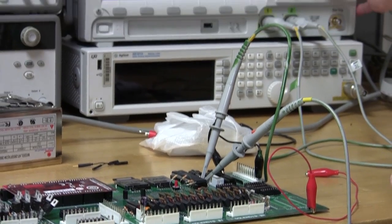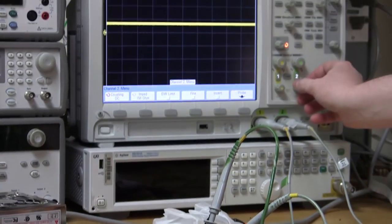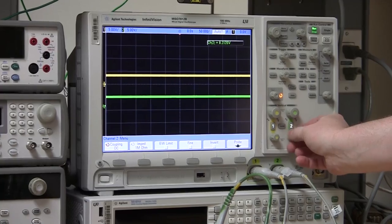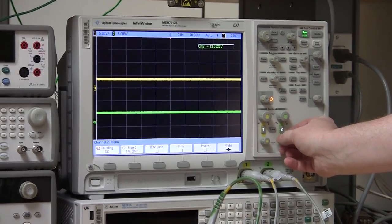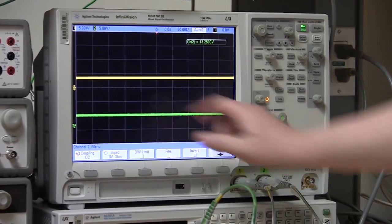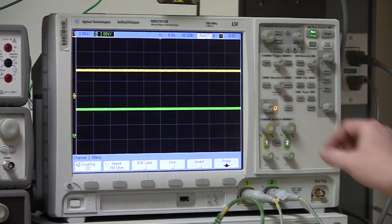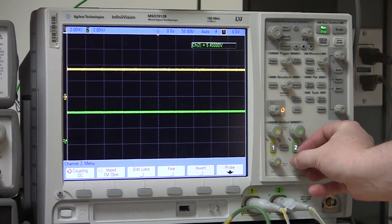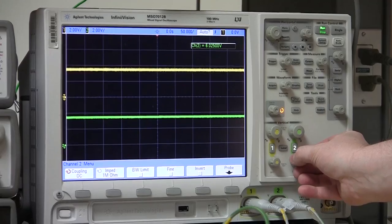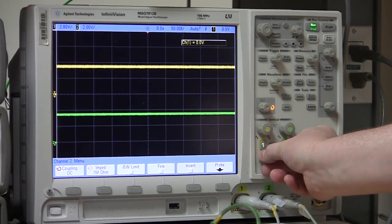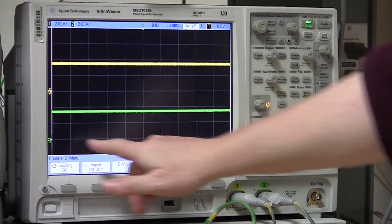All right, so we're going to turn on both channels. Okay. And right now, they're right on top of each other, so I'm going to move them down here. There we go. All right, so we're at five volts per division. I'm going to bump that up to two volts per division. Working with 3.3 volt logic here.